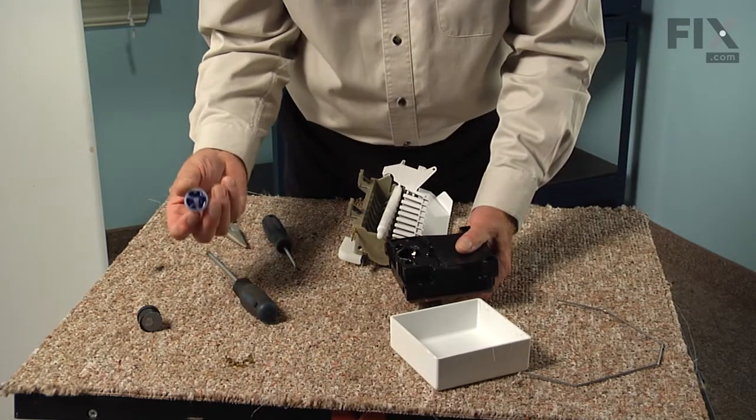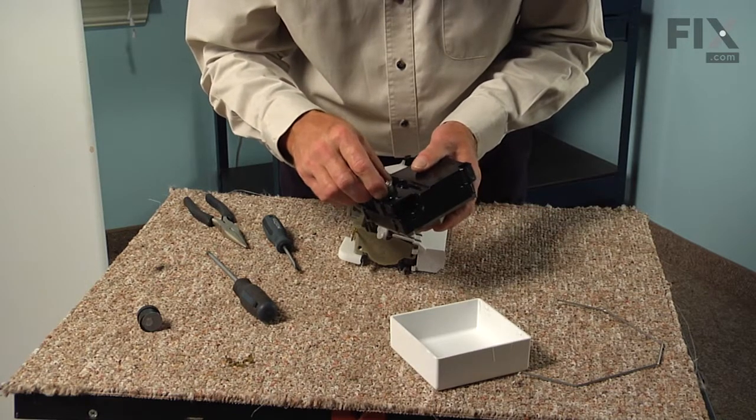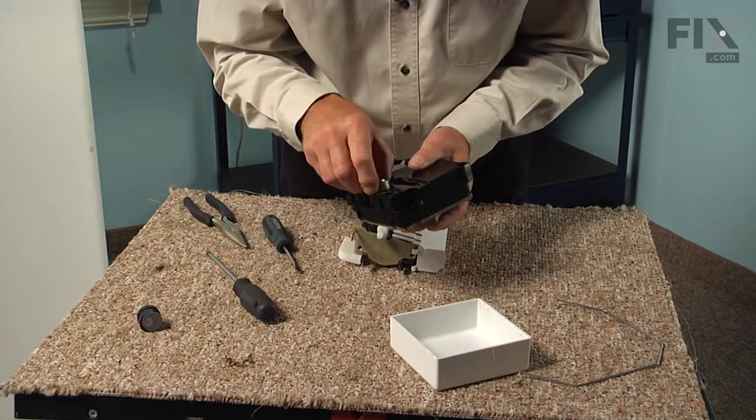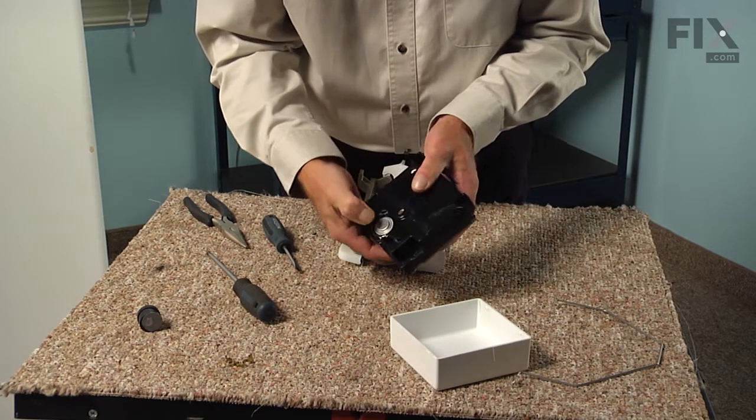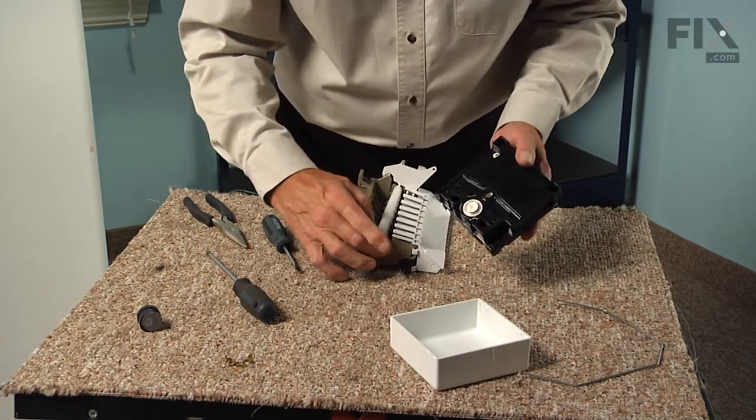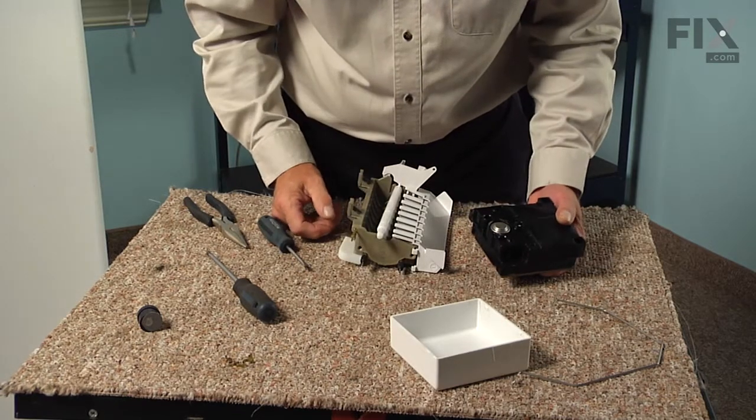We can then take the new thermostat and actually mount it right into the ice maker. Line up the two male pins, press it firmly into place and there should be a little bit of spring action there and that's what will hold that face of that thermostat against the body of the ice maker.